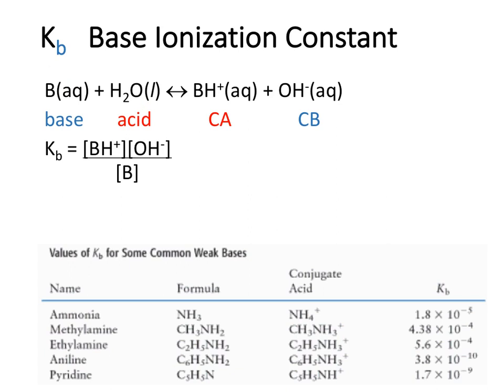We take our base, put it in water, and form a conjugate acid and conjugate base. So Kb equals the concentration of conjugate acid times concentration of conjugate base divided by the concentration of our base. Notice we avoid including H2O because it's pure liquid.